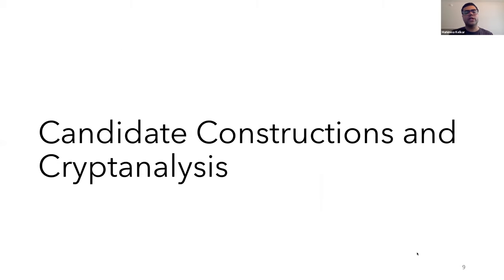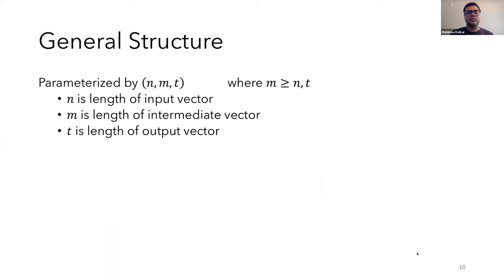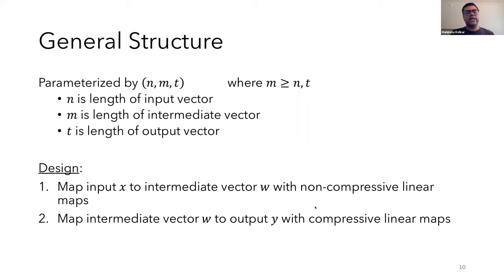I'll now proceed to introduce our candidate constructions. The general structure of all of our candidates is quite similar. We're parameterized by n, m, and t as before. And the core design now is to first map the input x to an intermediate w with non-compressive linear maps. And then map w to the output y with compressive linear maps. And these linear maps will be over different moduli.